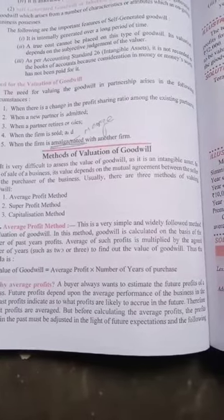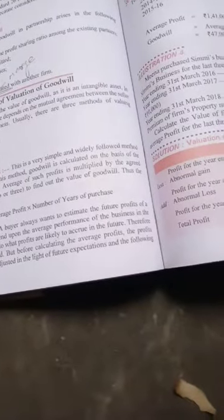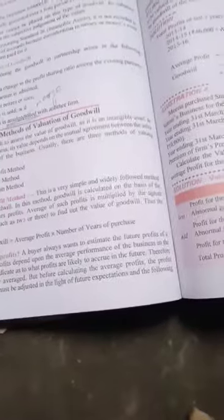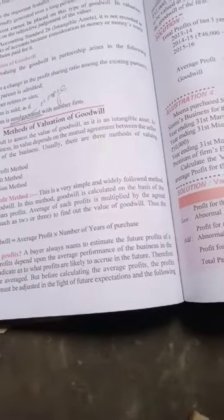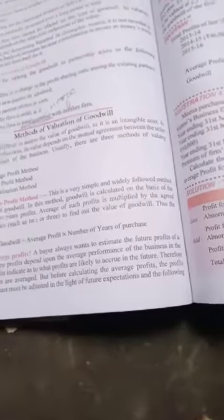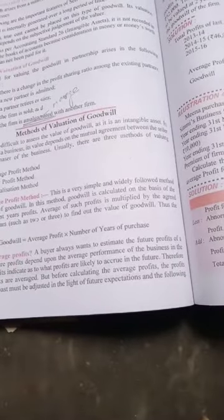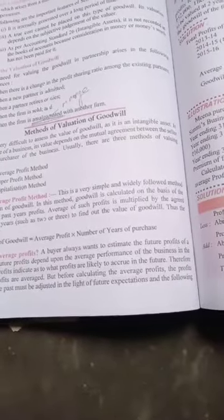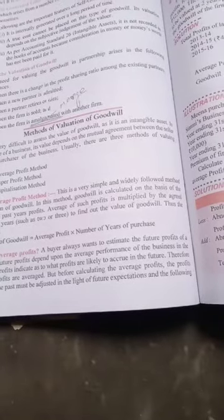First we have discussed about the Average Profit Method. This method, goodwill is very simple. It is based on past number of years' purchases.